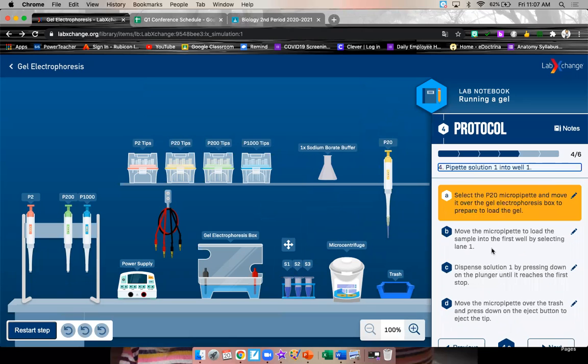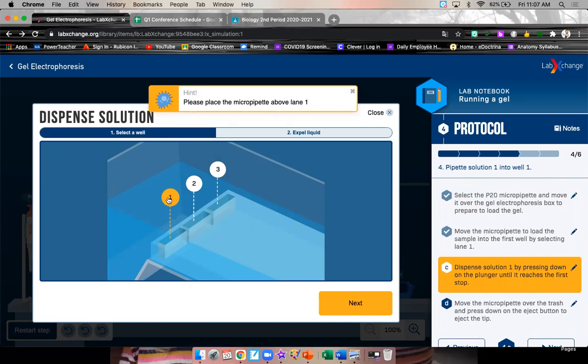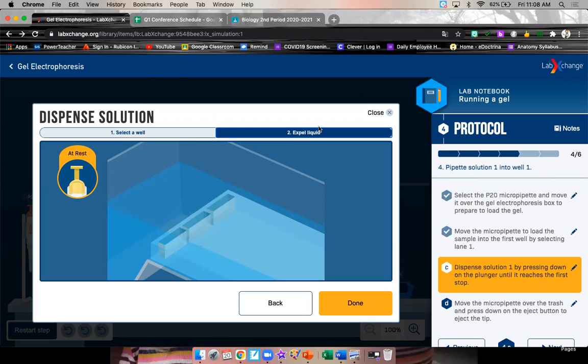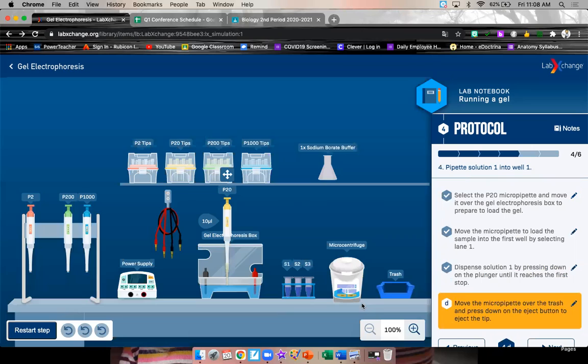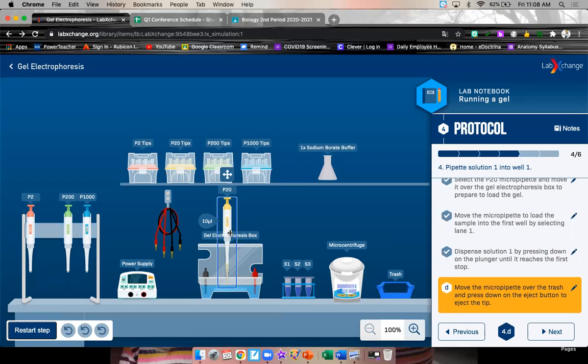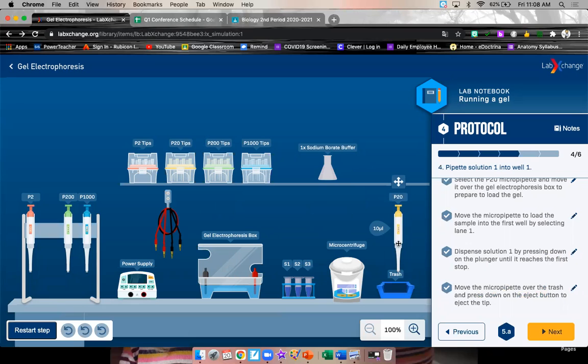Next, take your P20 pipette and move it over to the gel. Pick the well you want. We said S1 is going in well one. Then expel liquid. Again, only press for the first stop. If you hold it in too long, then you'll overflow it. Cool. Done. Move the pipette over to the trash. Eject tip. You don't want to reuse that.